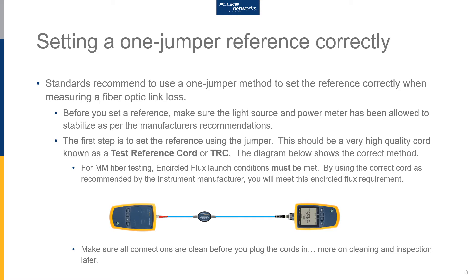The next step in the reference process is to use the jumper cord to set the reference. The cord needs to be a test reference cord — we sometimes refer to these as TRCs — not a patch cord. You can't use patch cords for making good loss measurements because they contribute too much loss. Test reference cords contribute very little loss: less than 0.1 dB for multimode cords and 0.2 dB for single mode cords.